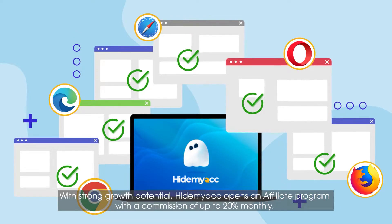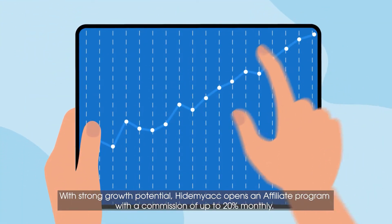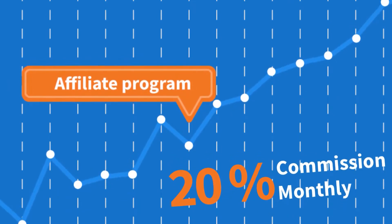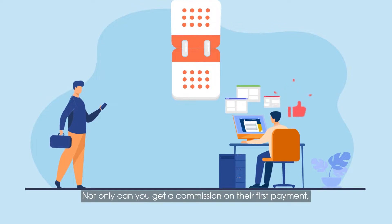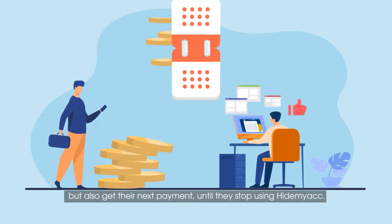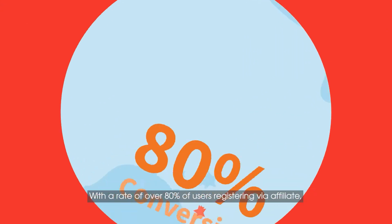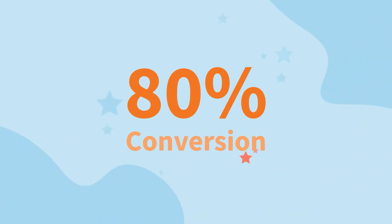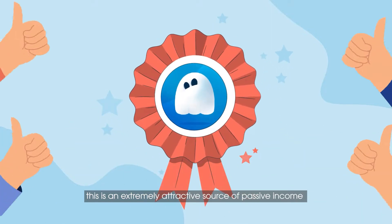With strong growth potential, HideMyAk opens an affiliate program with a commission of up to 20% monthly. Not only can you get a commission on their first payment, but also on every subsequent payment until they stop using HideMyAk. With a rate of over 80% of users registering via affiliate, this is an extremely attractive source of passive income.